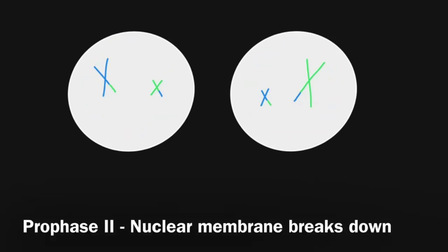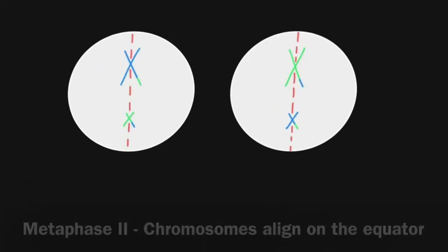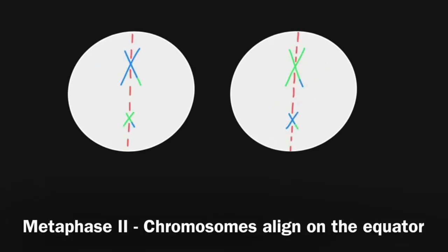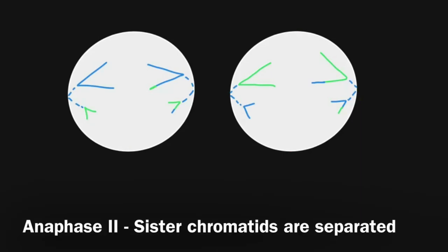Meiosis 2 then begins with prophase 2, where the nuclear membrane breaks down. The chromosomes, each existing with two sister chromatids, then align along the equator during metaphase 2. This is followed by anaphase 2, where the sister chromatids are separated by spindle fibres. Once separated, they can be called chromosomes.